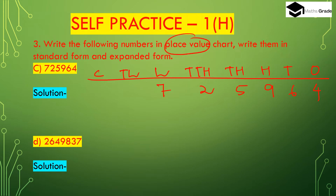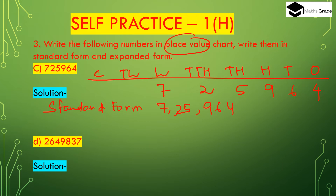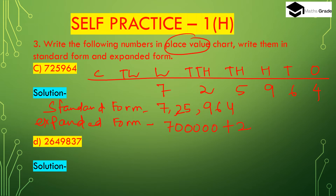Standard form is 7,20,25,964. Expanded form is: 7,00,00,000 plus 20,00,000 plus 0 plus 20,000 plus 5,000 plus 900 plus 60 plus 4. This is the expanded form of 7,20,25,964.